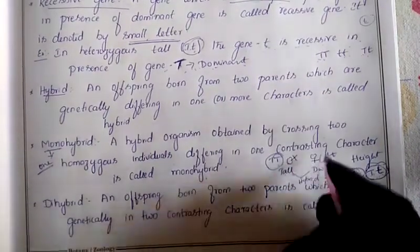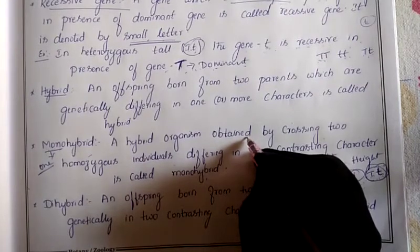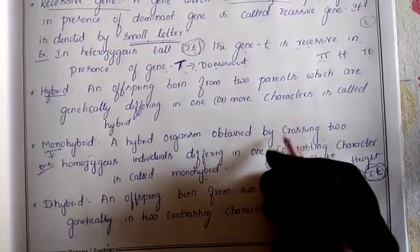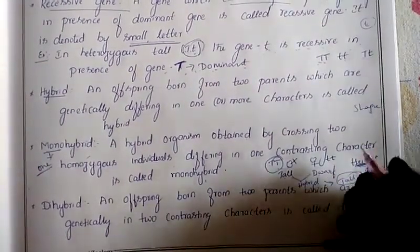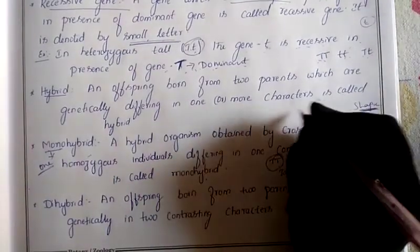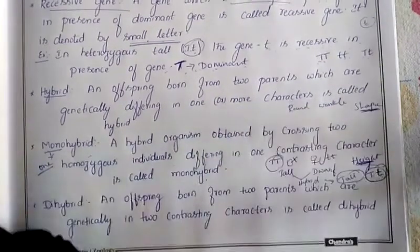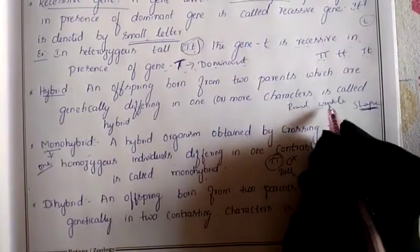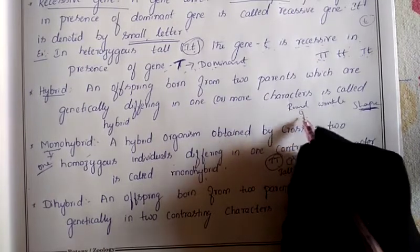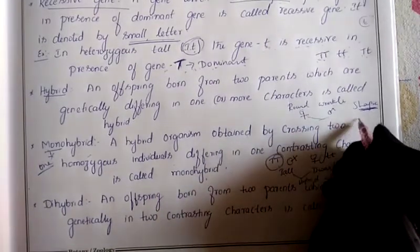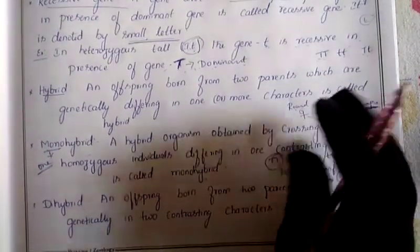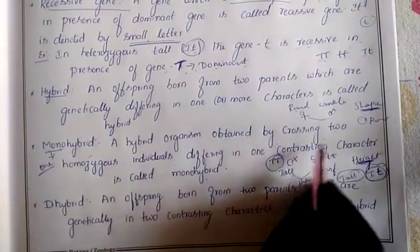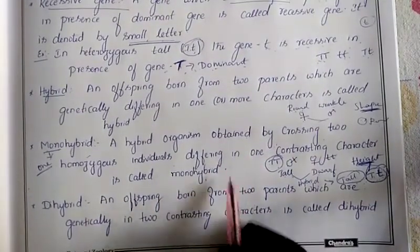Another example: round seed and wrinkle seed. This is also one character - seed shape. We are taking the shape character, which gives two types: round shape and wrinkle shape. If father is round shape and mother is wrinkle shape, the offspring will get round shape - mother's character is expressed, but father's character is also present in their body in a hidden condition. Crossing two different parents by taking one character is called a monohybrid cross.